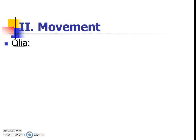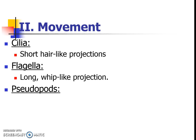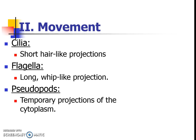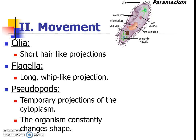First let's jump into how they move — it'll help us review some of our organelles. A lot of their movement can be through short hair-like projections. Some of them can be through long whip-like projections. And some of them can be through projections or fake feet that are coming out of the cytoplasm. Those organisms are really cool because they're constantly changing shape and look like the blob.